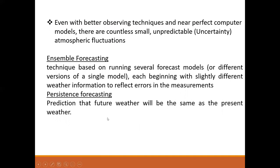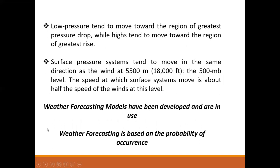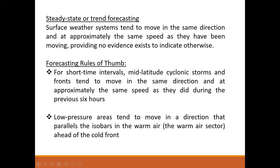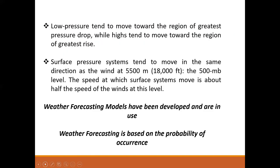Even with better observing technology and near-real-time computer models, there are also uncertainties — which can be aleatory or epistemic. There is also ensemble forecasting, steady-state or trend forecasting, and forecasting using rules of thumb. Weather forecasting models have been developed and are in use, based on the probability of occurrence, though sometimes predictions do not turn out as expected.